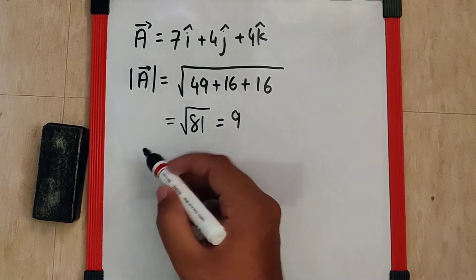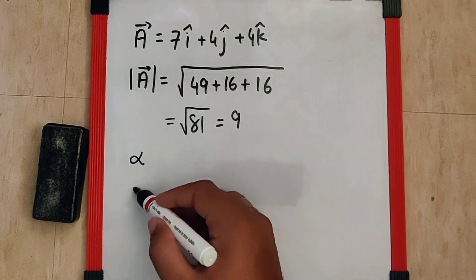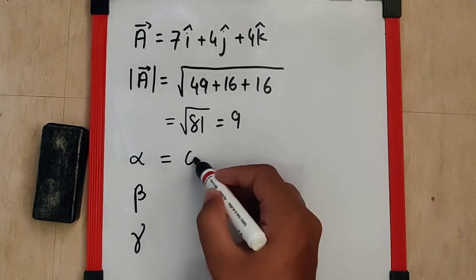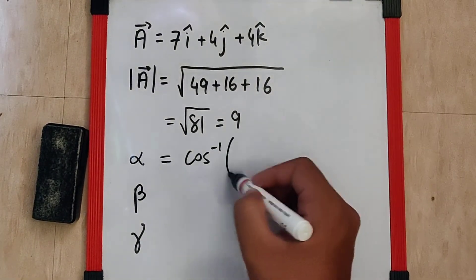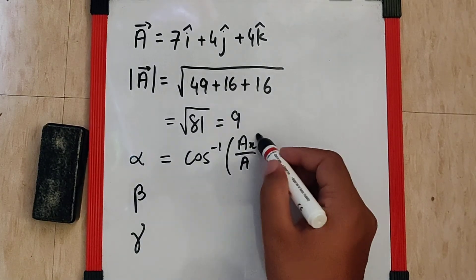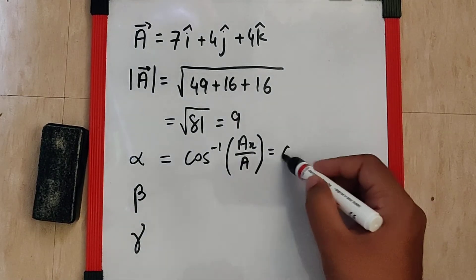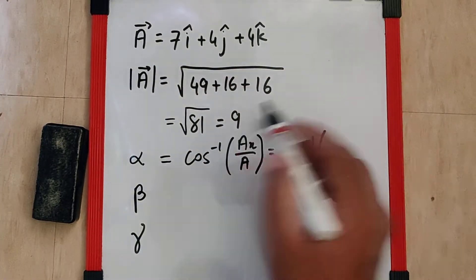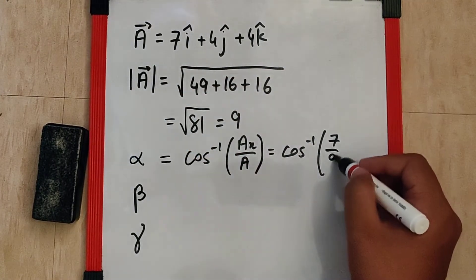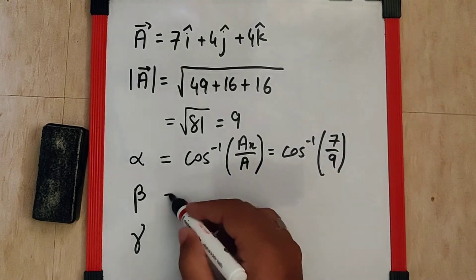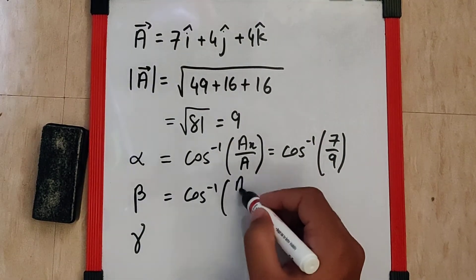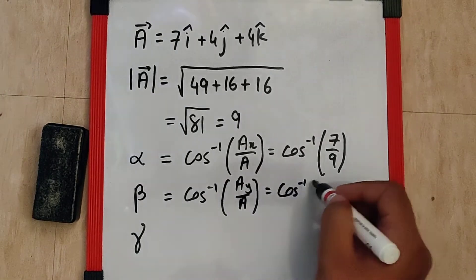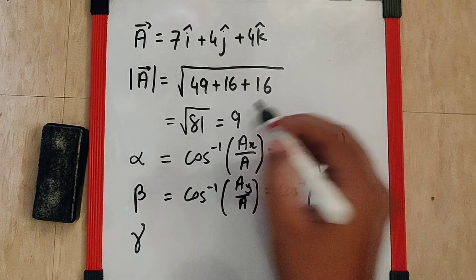Now you want the angle alpha, beta and gamma. Angle alpha is cos inverse of ax by A which is cos inverse of ax is 7, A is 9, so cos inverse of 7 by 9. Beta is cos inverse of ay by A which is cos inverse of 4 by 9.